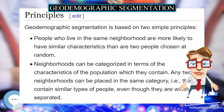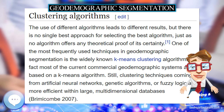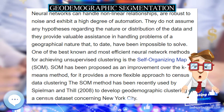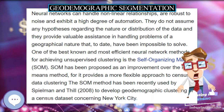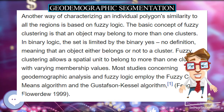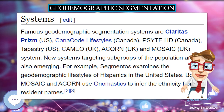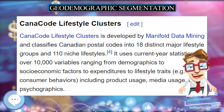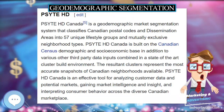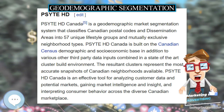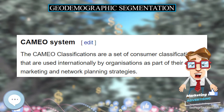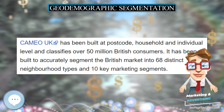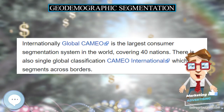Cameo System. The Cameo classifications are a set of consumer classifications used internationally by organizations as part of their sales, marketing, and network planning strategies. Cameo UK classifies over 50 million British consumers into 68 distinct neighborhood types and 10 key marketing segments. Internationally, global Cameo is the largest consumer segmentation system in the world, covering 40 nations. There is also a single global classification, Cameo International, which segments across borders. Cameo was developed and is maintained by Call Credit Information Group.